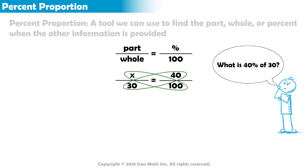To solve, we find the cross products by multiplying the values in each diagonal. 100 times x equals 100x, and 30 times 40 equals 1,200.